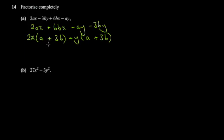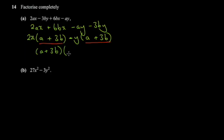Notice that I have matched my brackets — this one and this one. This is very important. Once you've matched the brackets, you can figure out the final answer. It's as if you're factoring out the common bracket (a + 3b), and you're left with (2x minus y). So you get (a + 3b)(2x − y) and you have factorized completely.